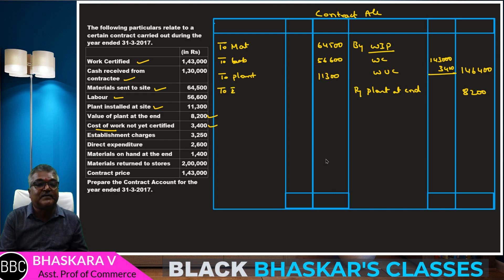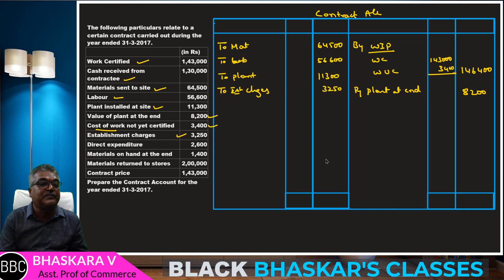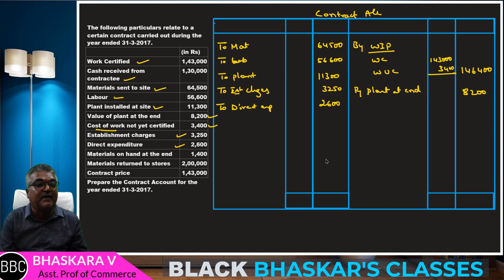Then, establishment charges — to establishment charges: 3,250. Then direct expenditure — to direct expenditure: 2,600.